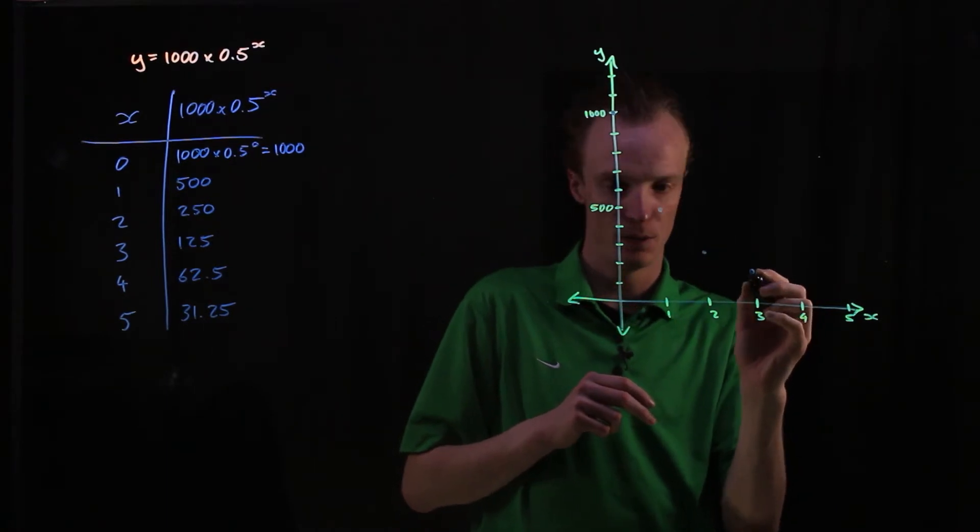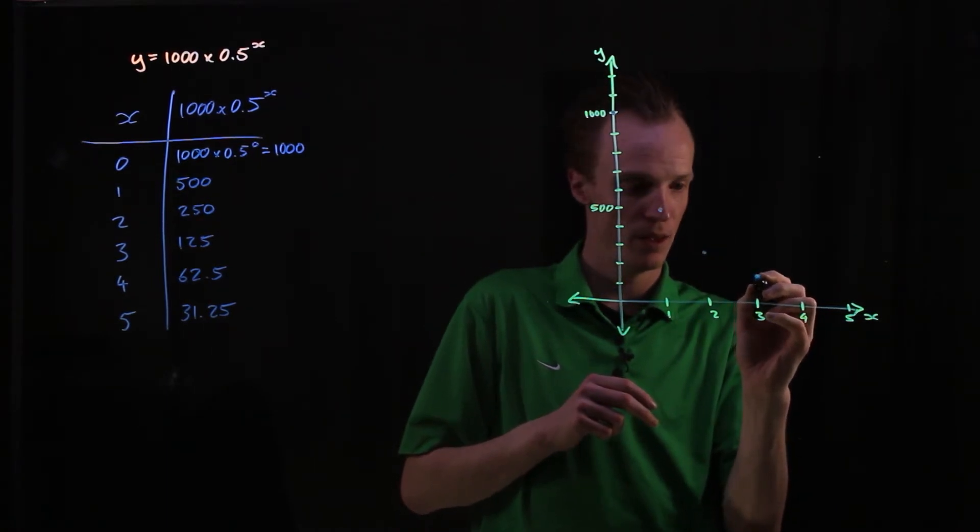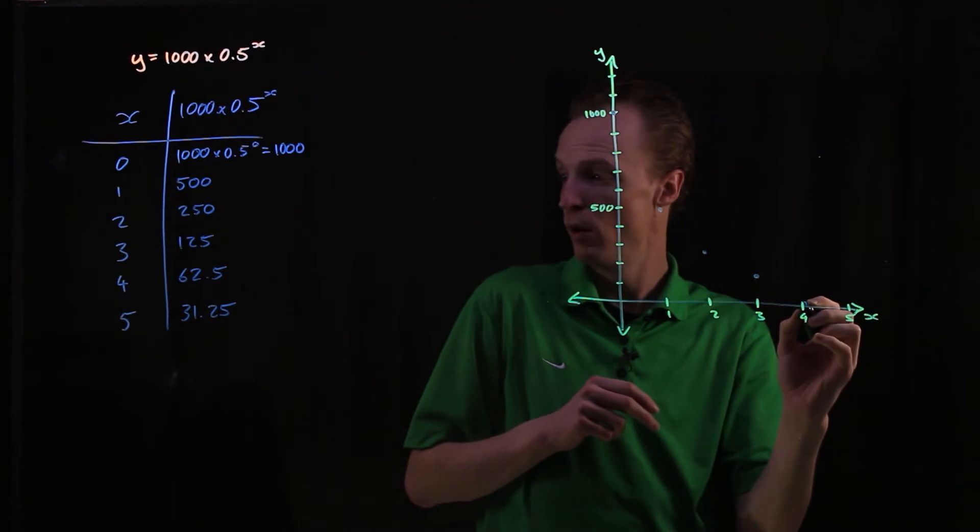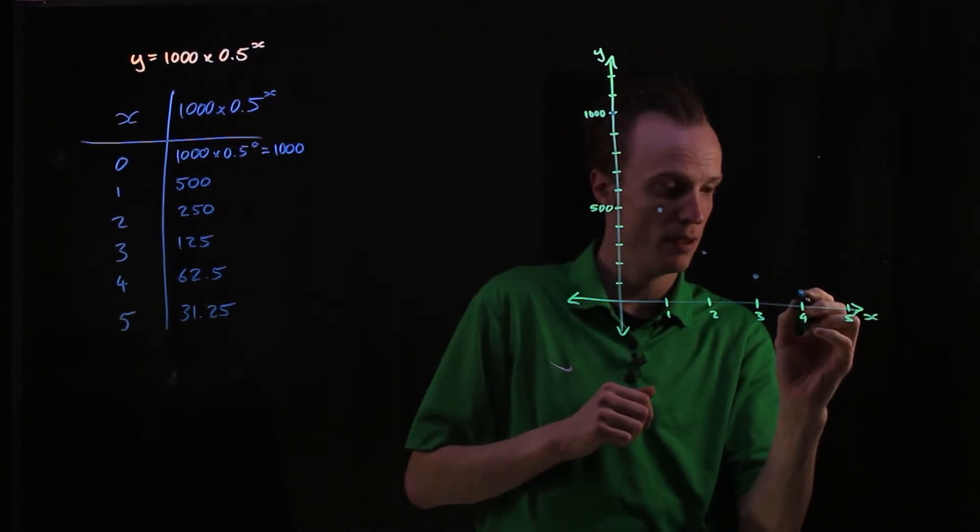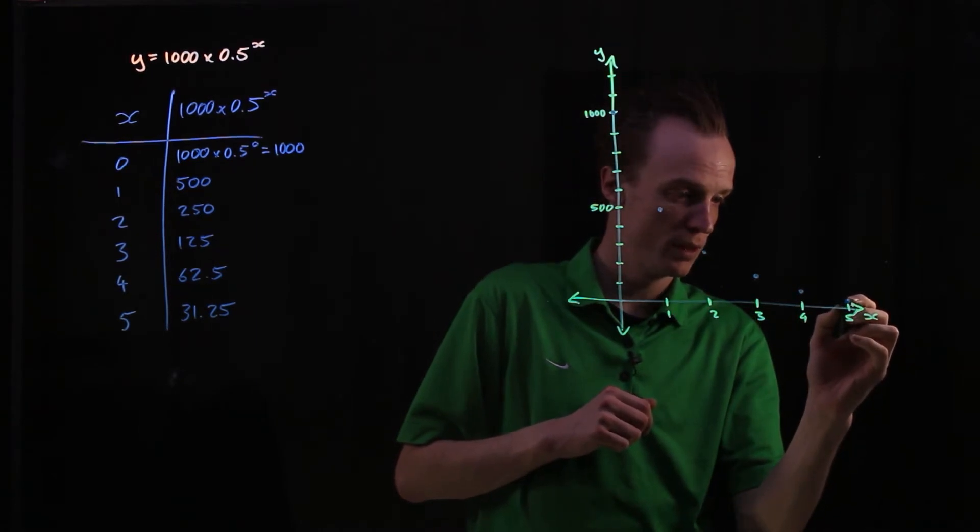At 3 it was at 125 about there. At 4 it was at 62.5 so about there. And at 5 it was at 32.5 so about there.